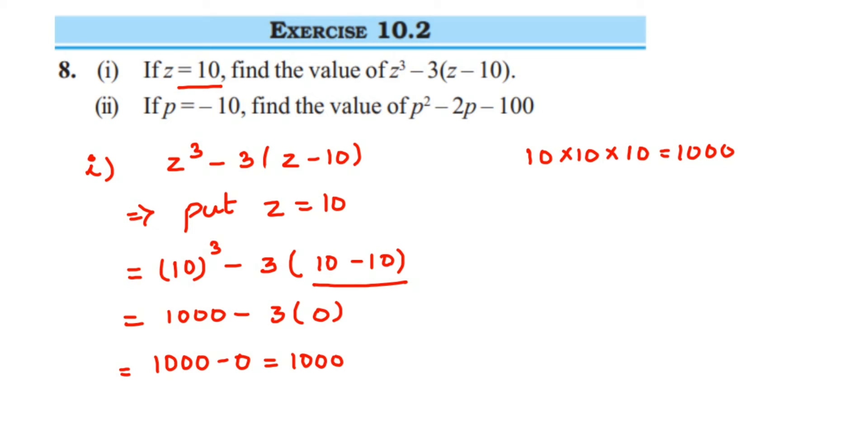Now second question. The second question is saying that put p is equal to minus 10 and find the value of p square minus 2p minus 100. So the given expression is p square minus 2p minus 100. Here, in place of p, we are going to put minus 10.